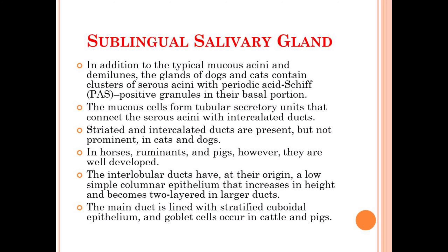Another characteristic of the sublingual salivary gland is that the interlobular ducts present in the gland have low simple columnar epithelium that increases in height and becomes two-layered when it becomes a larger duct. Basically, during the course of formation of different ducts, the interlobular duct transforms into a larger duct, and the simple columnar epithelium of low height transforms into a columnar epithelium of greater height with two layers.